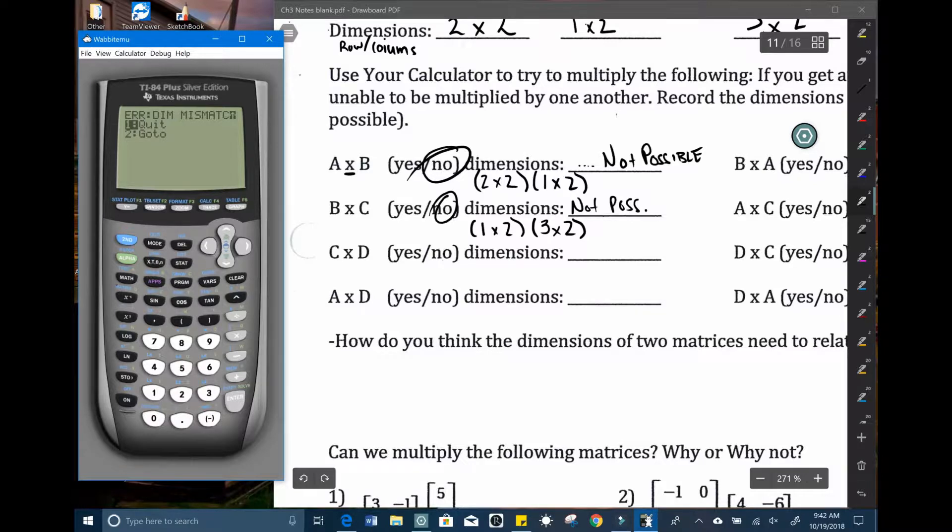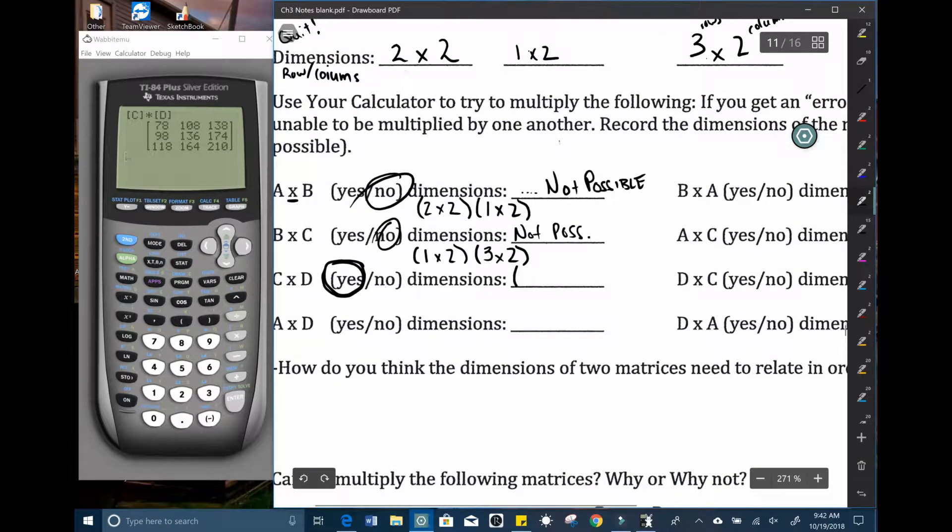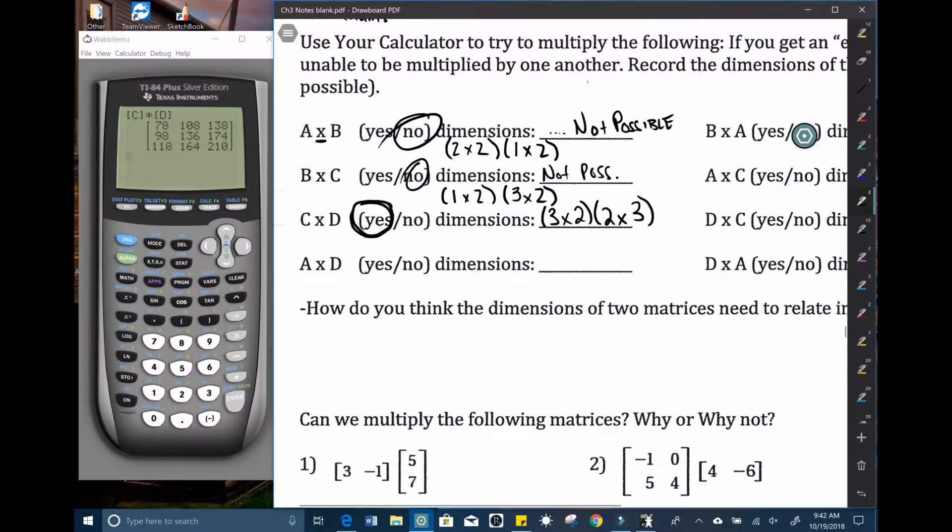Let's try C times D. Second matrix, clear out. C times D. And boom, this one works. Now I'm not concerned about writing everything down, but yes it does work. And if we write those matrices dimensions down, we were taking a three by two matrix, which was C, and multiplying it by a two by three matrix. So we have a different, this one actually works. And notice something about the dimensions.